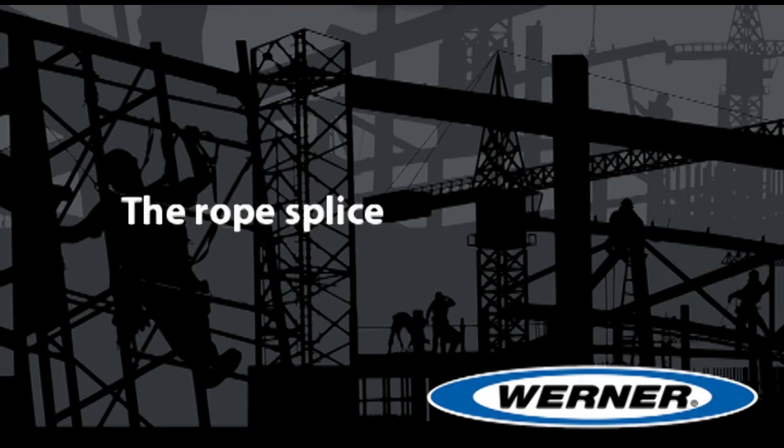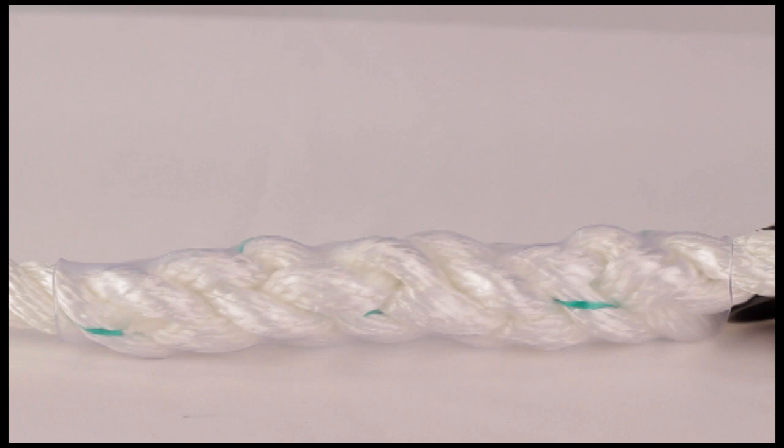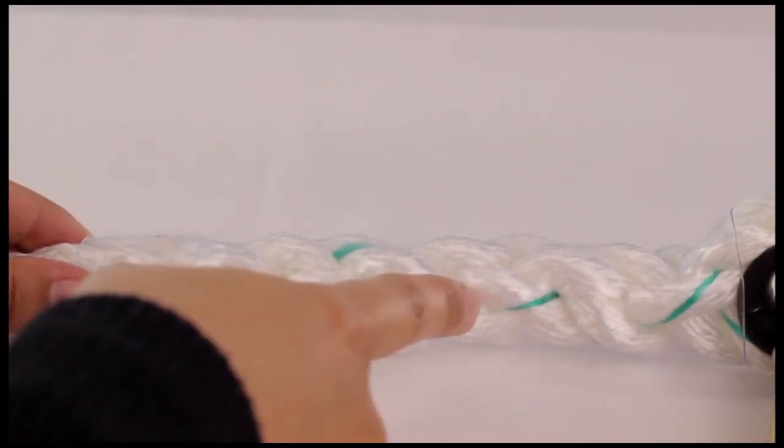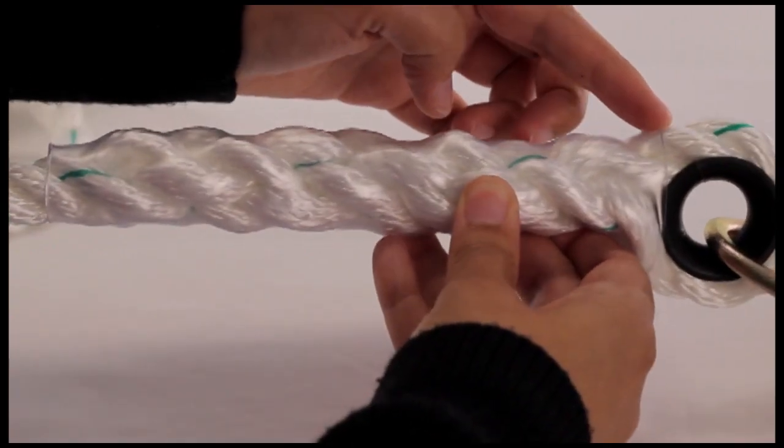The Rope Splice. The rope splice should be tight with five full tucks. To count tucks, begin at the thimble. Pick one braid and count every other braid.